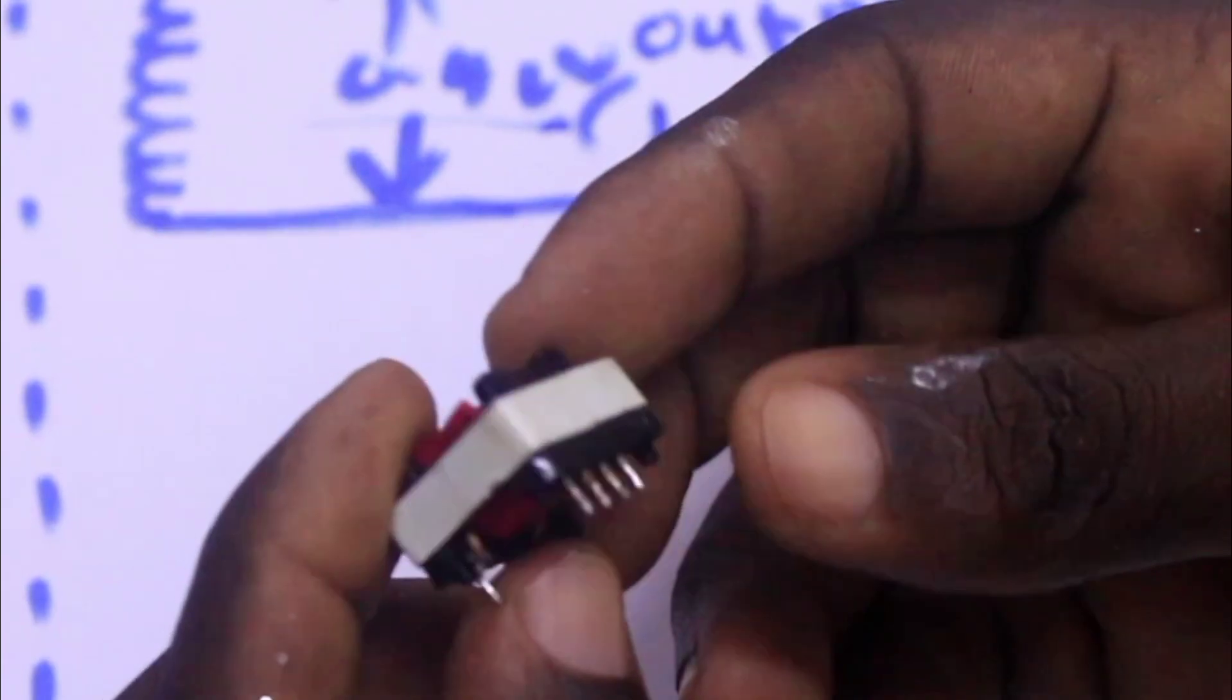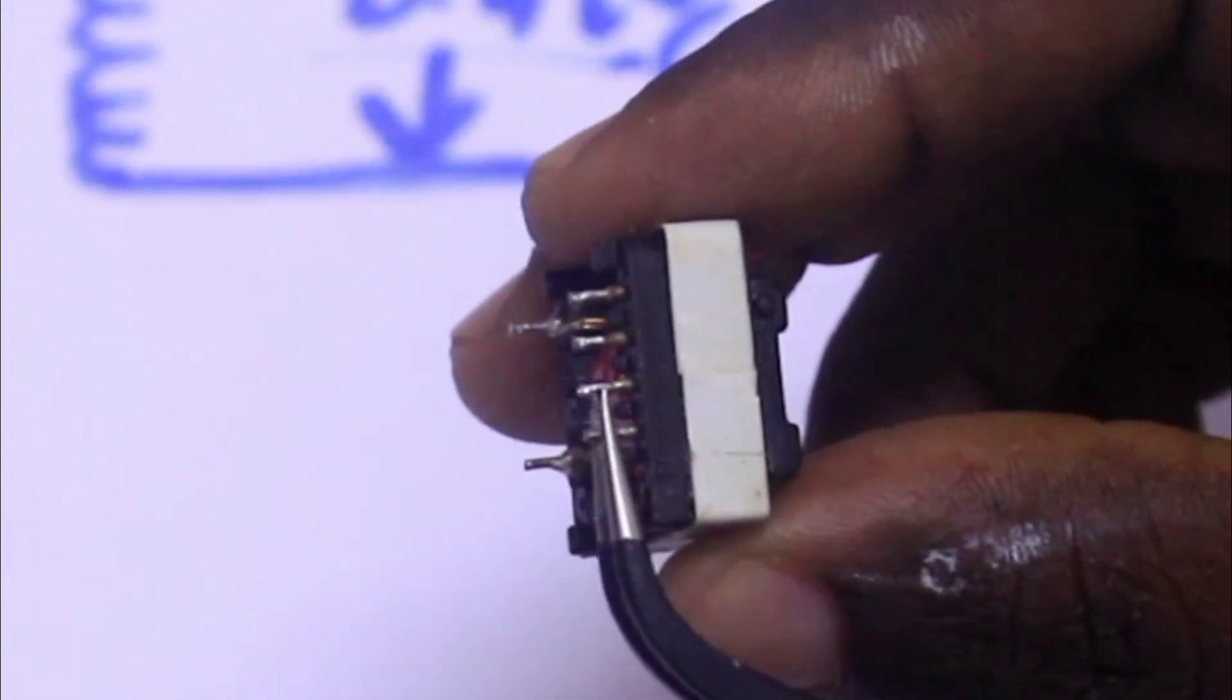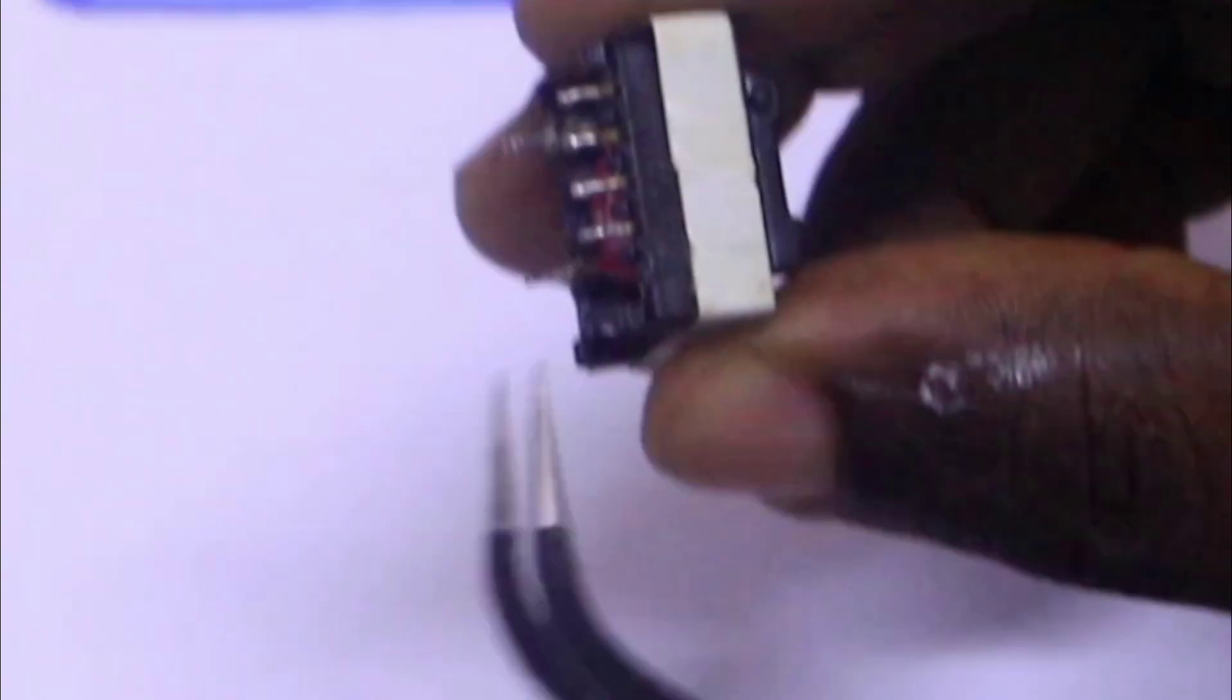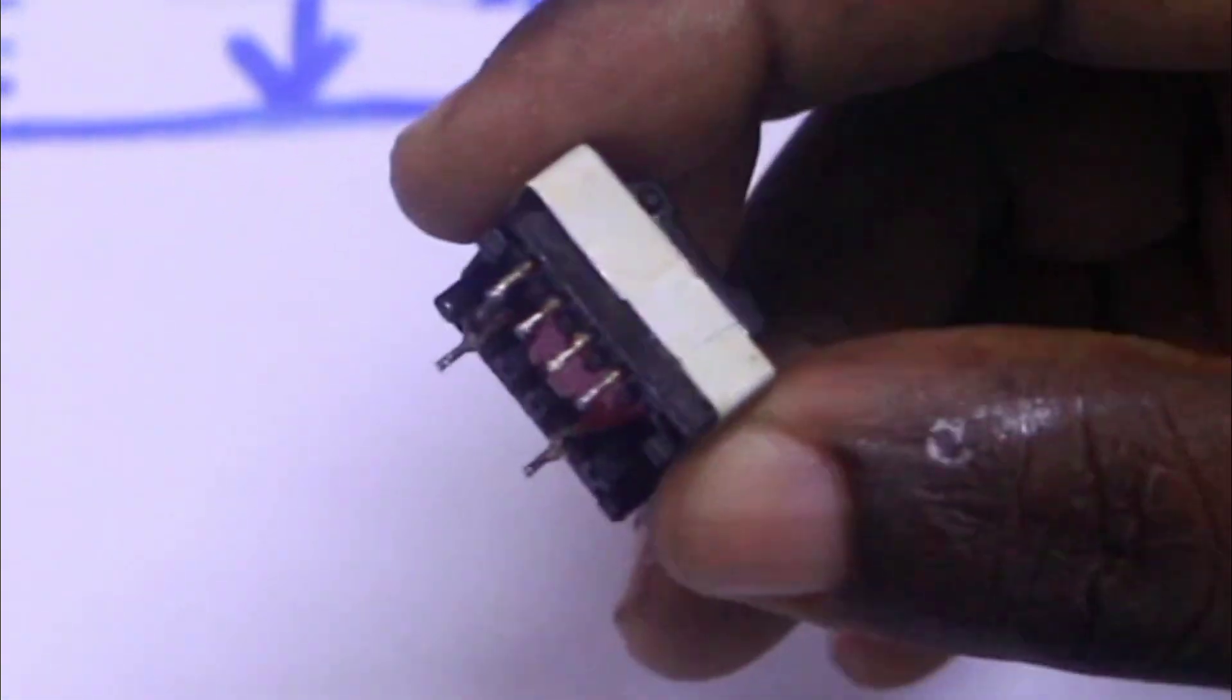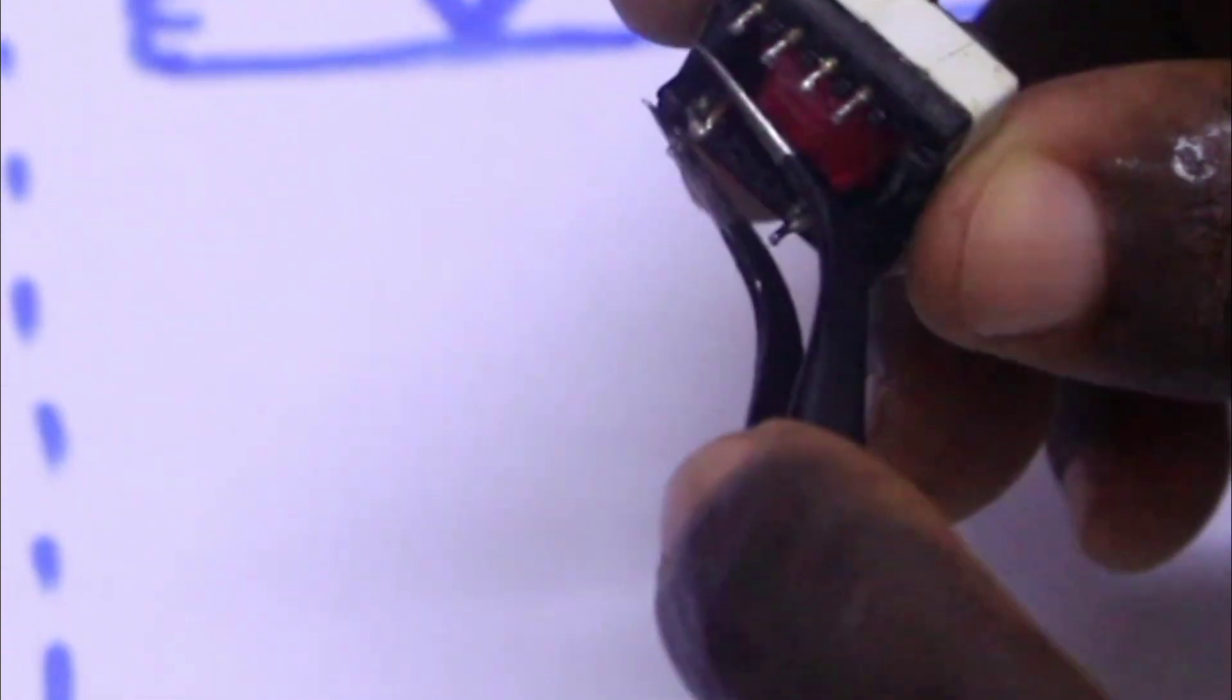That is how you can test if your transformer from the SMPS power supply is okay. You can look at the transformer. This is the input terminals. This is the auxiliary terminals which are supplying the PWM controller and these are the output terminals.